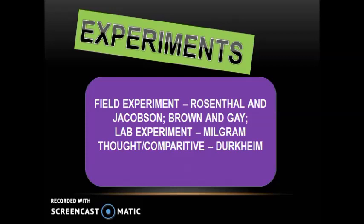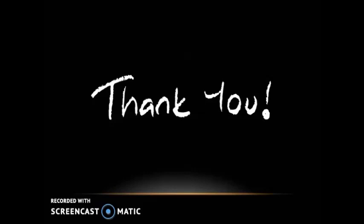A final method is the comparative method, used by Émile Durkheim in his study of suicide. This was the research Durkheim used to show how sociology could be a science. This piece of research is perfect in a methods question but also in a debates question such as 'should sociology be a science?' and the value-freedom debate.